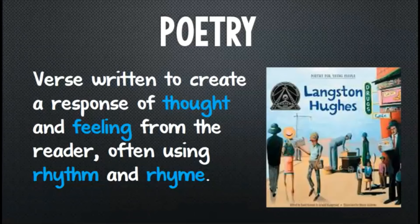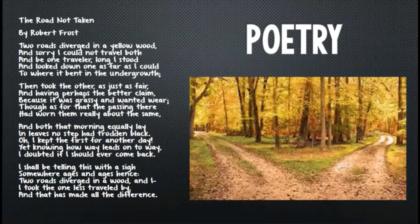Now that we've discussed many of the subgenres of fiction, let's talk about our second main genre category: poetry. Poetry is writing created to evoke a responsive thought and feeling from the reader, often using rhythm and rhyme. There are many forms of poetry, and we'll spend an entire unit both analyzing and writing poetry during the spring semester. An example of a poem that follows a more traditional rhythm and rhyme scheme is The Road Not Taken by Robert Frost. You can see that the words are separated into stanzas, kind of like paragraphs, and feature rhyming words at the end of the lines, like would, stood, could, and fair, where, and there.